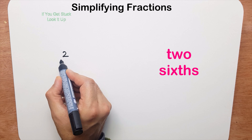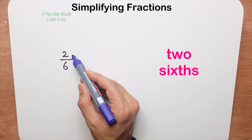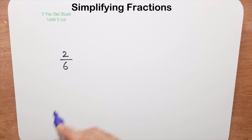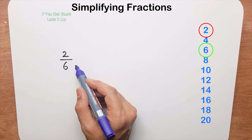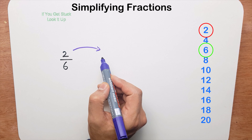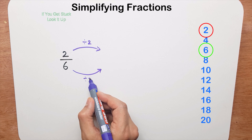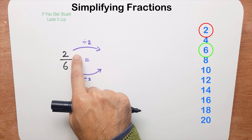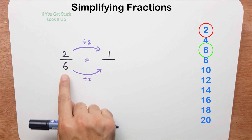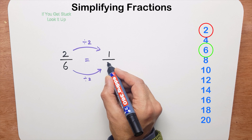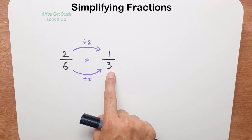My first question is 2 sixths. I ask myself which times table are 2 and 6 both in. Looking at the 2 times table, I can see both 2 and 6 are in it. So I divide the numerator by 2 and the denominator by 2. 2 divided by 2 is 1, and 6 divided by 2 is 3. So 2 sixths simplifies to 1 third, and I can't simplify this any further.